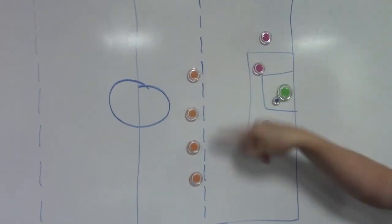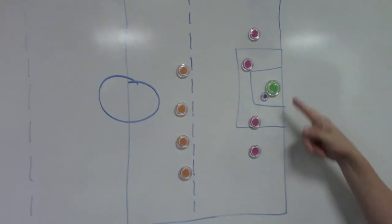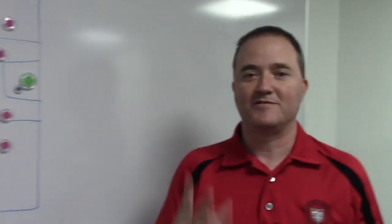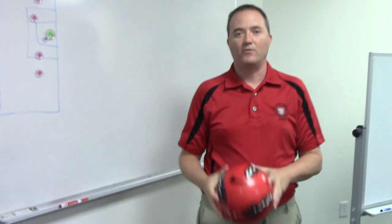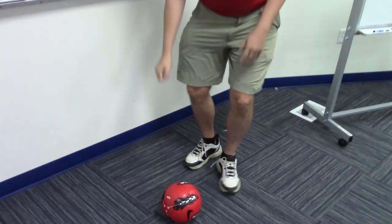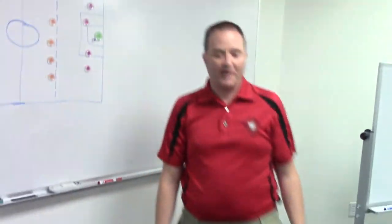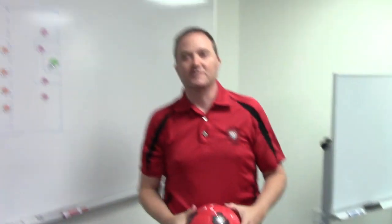So once they're behind the build-out line, then the keeper has three and three options only. They, with the ball in their hands, may throw the ball to a teammate, may roll it to a teammate, or set it down and kick it to a teammate. And what we mean by that is in one fluid motion.